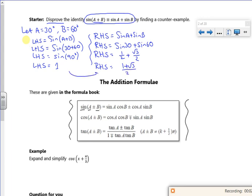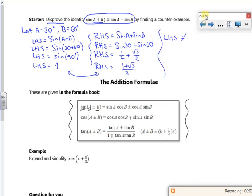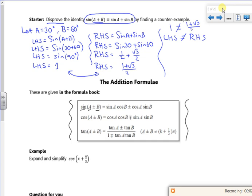So what I've got is 1 plus root 3 over 2. And if you look, they're not the same are they? So the left hand side isn't the same as the right hand side. Because my 1 isn't the same as my 1 plus root 3 over 2. So I've disproved it. So therefore, disproved the identity.